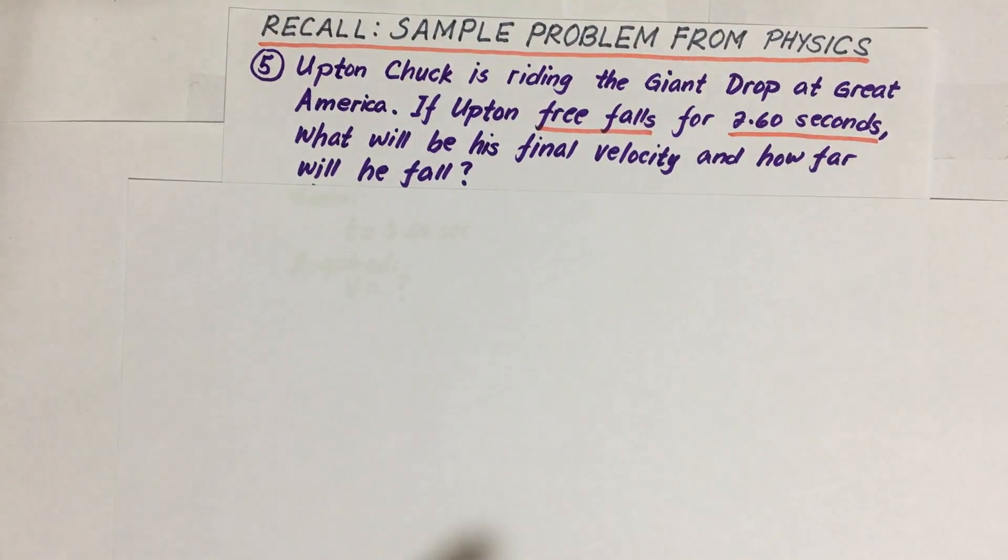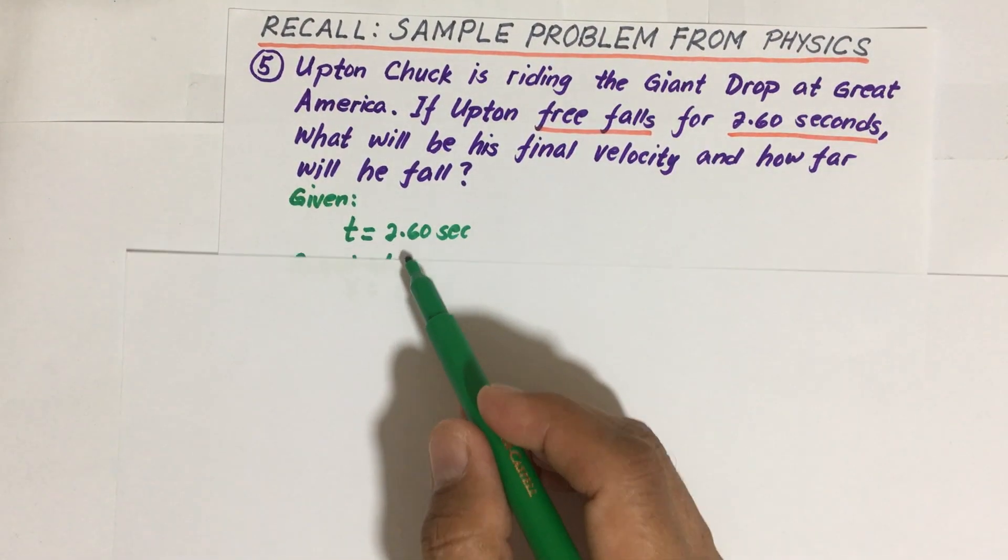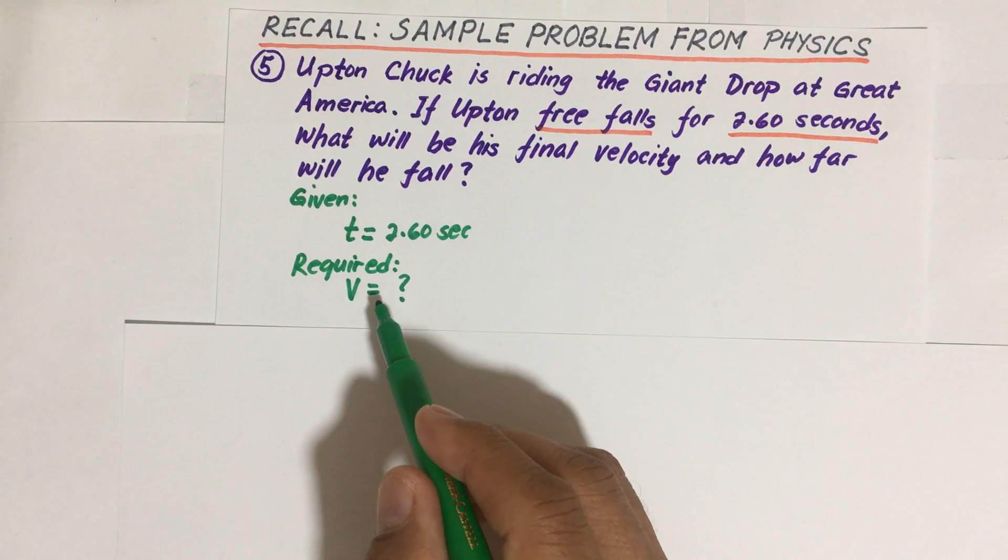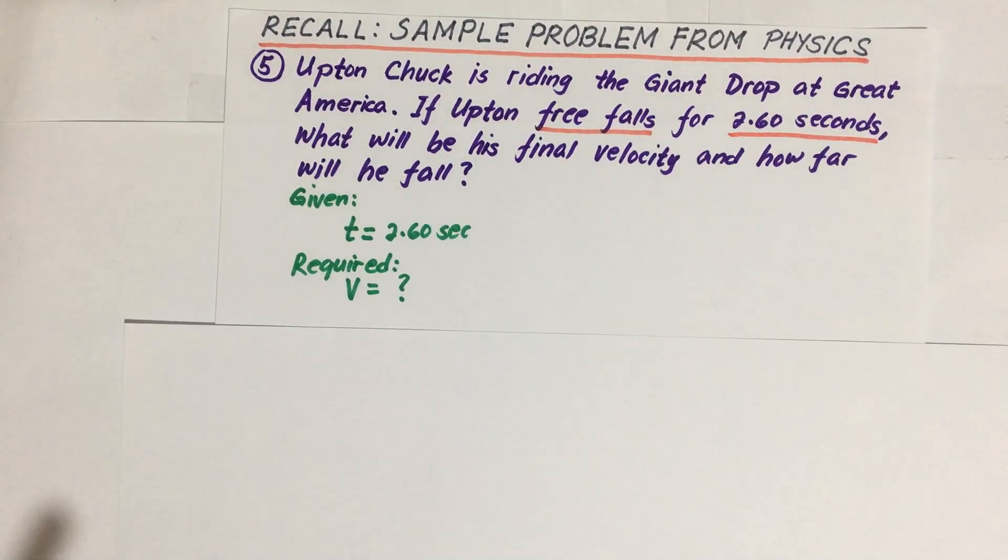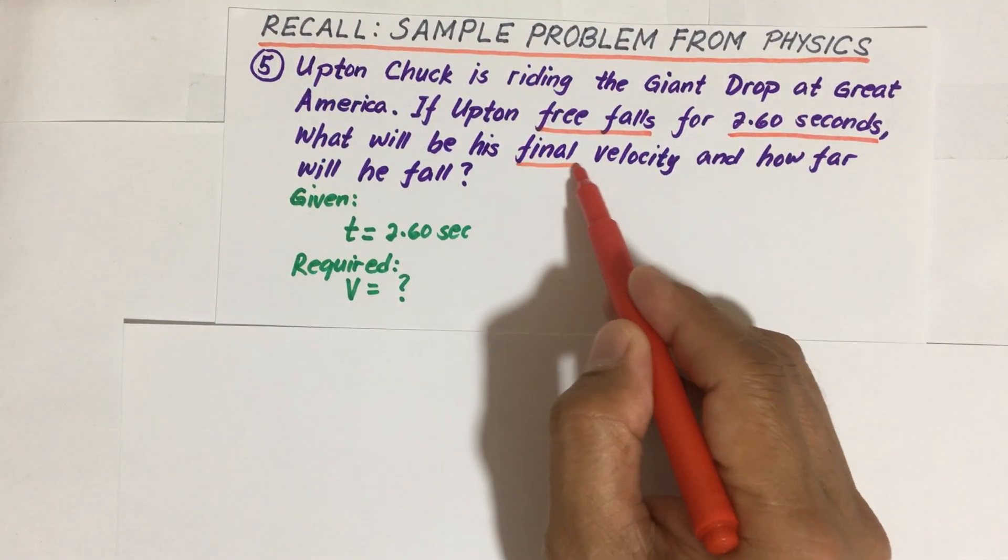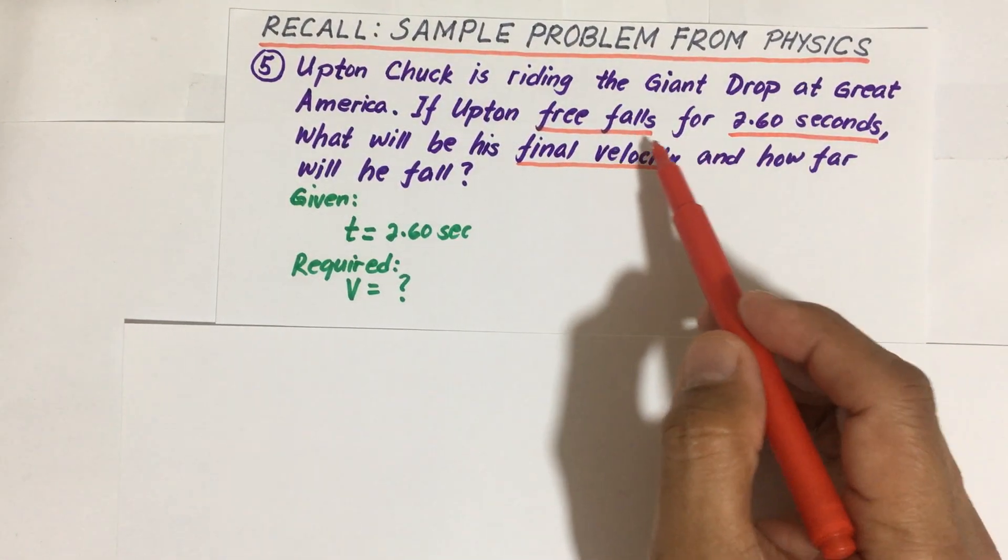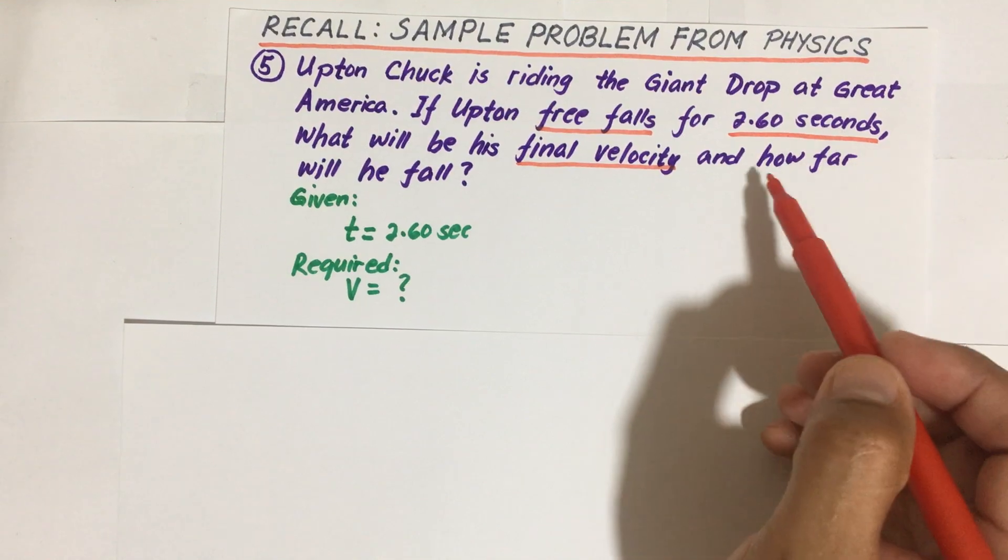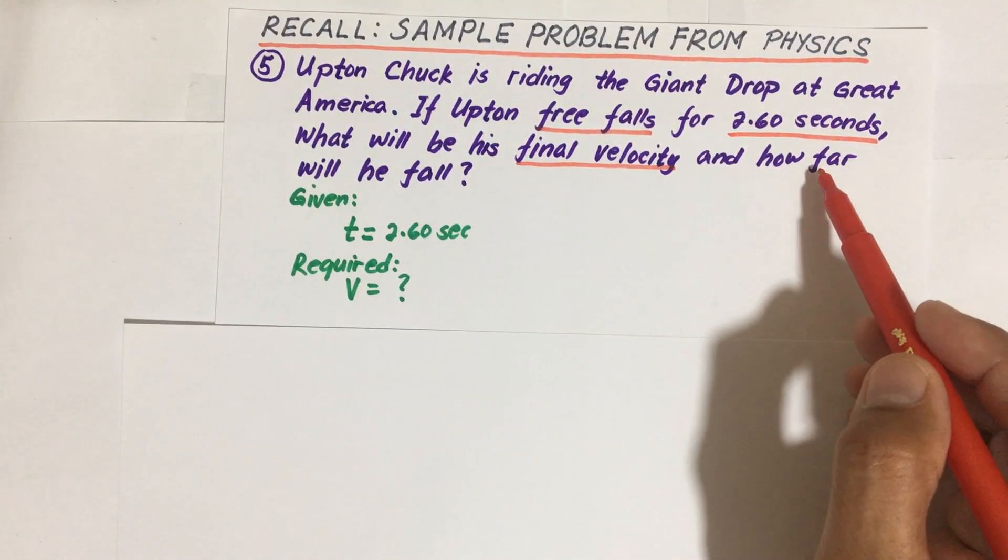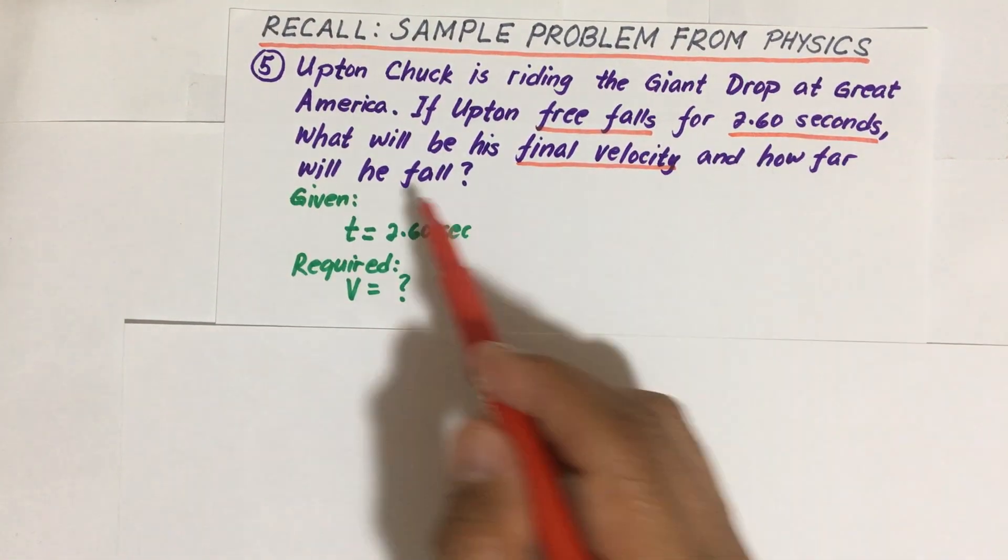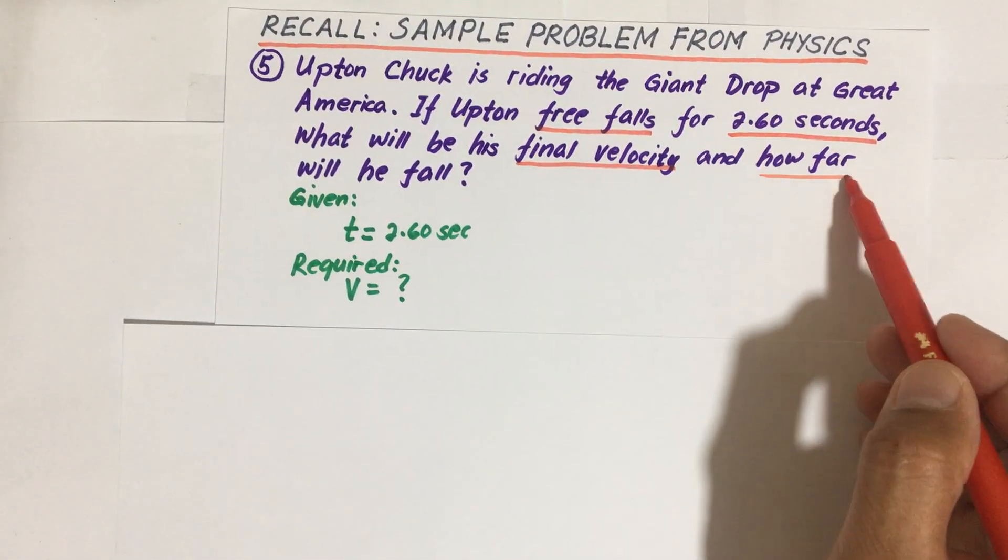We're given the free fall time of 2.60 seconds. And we are required here to solve for the final velocity—so what will be his final velocity after this 2.60 seconds? And how far will he fall? That is the displacement.